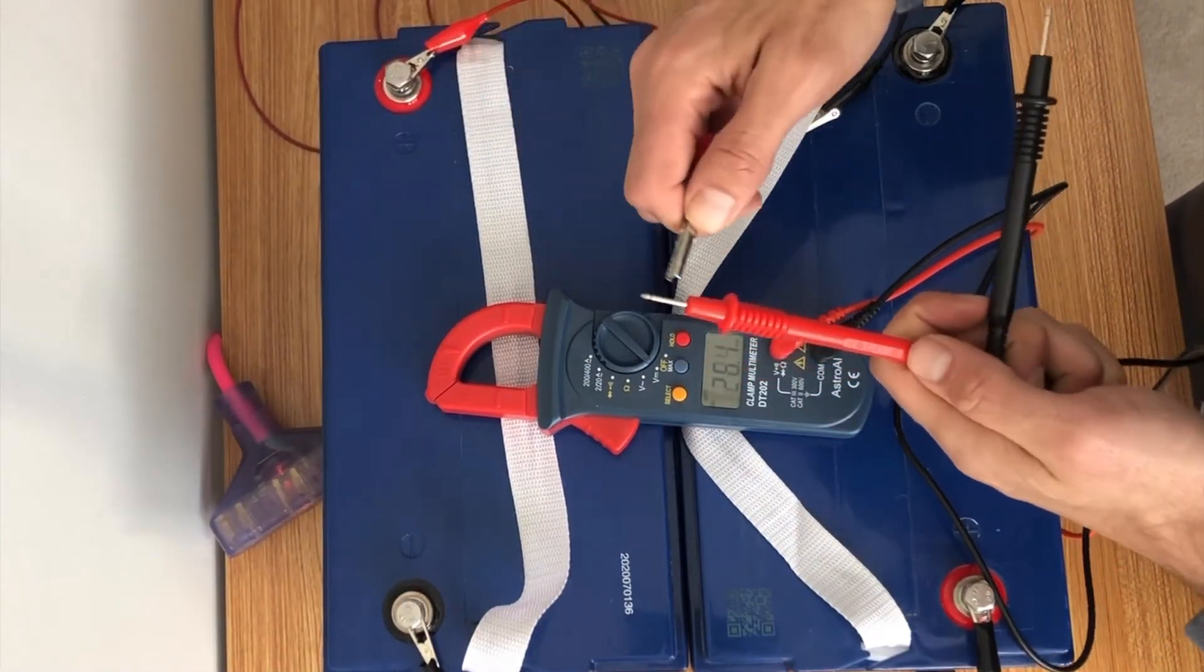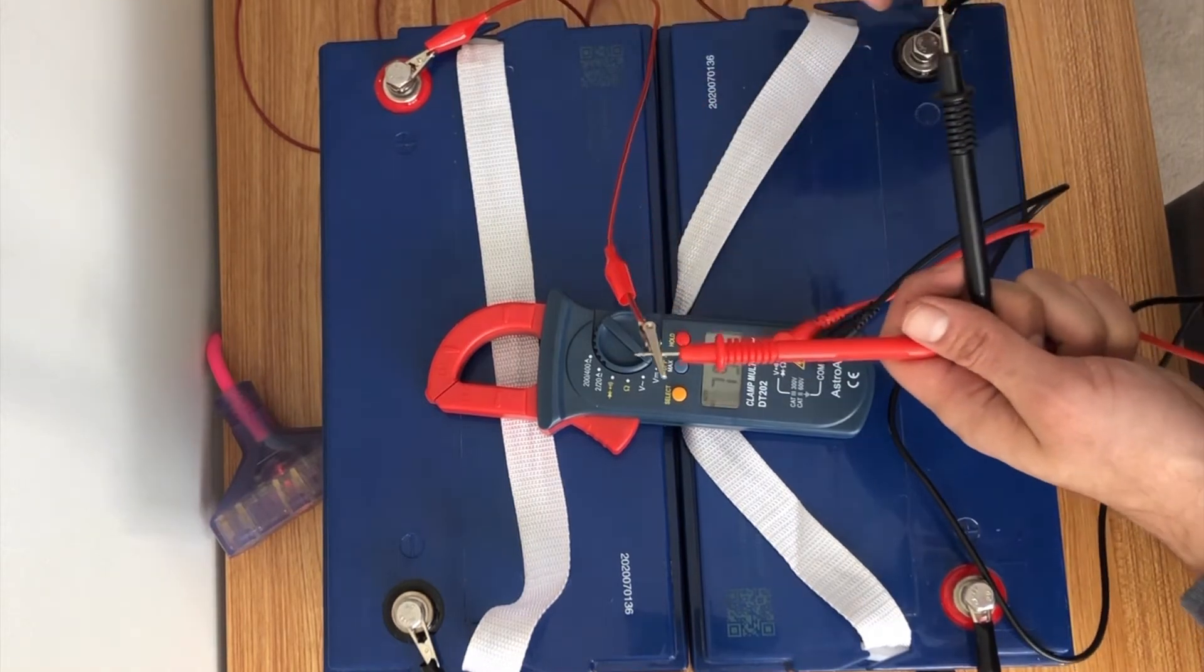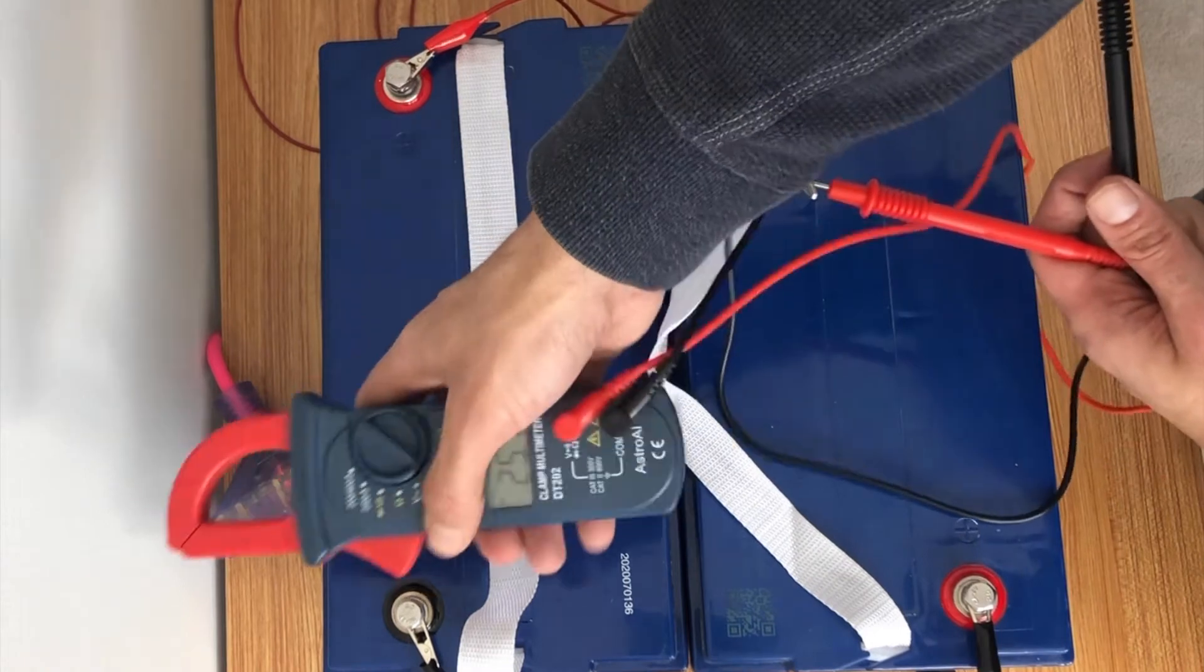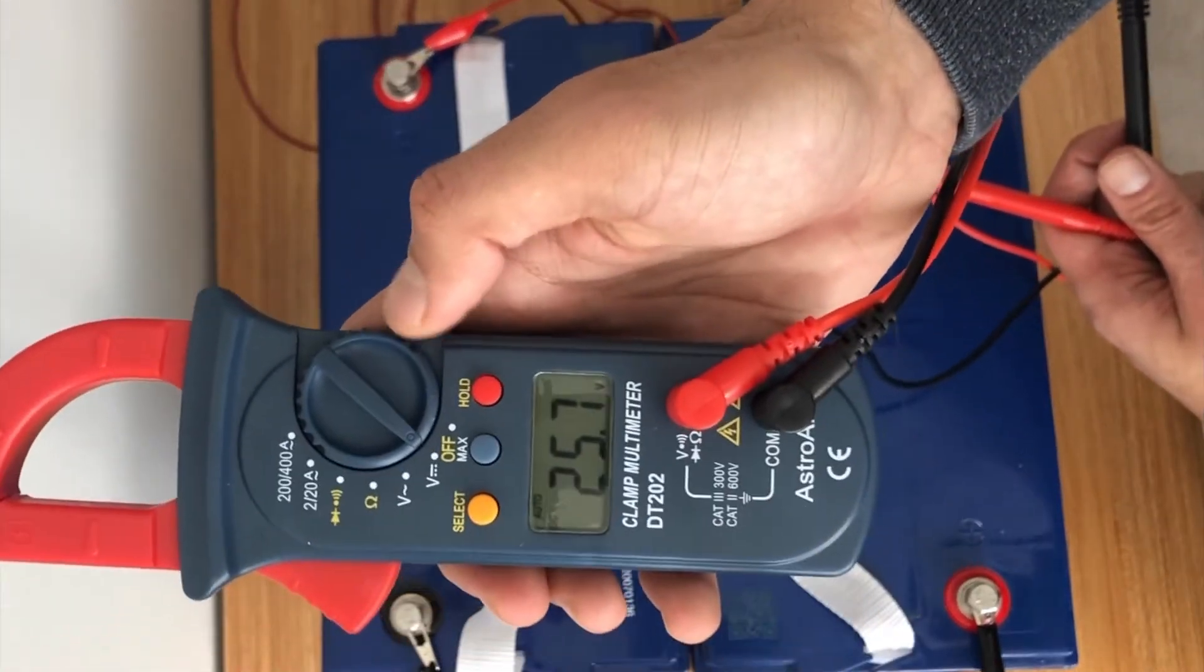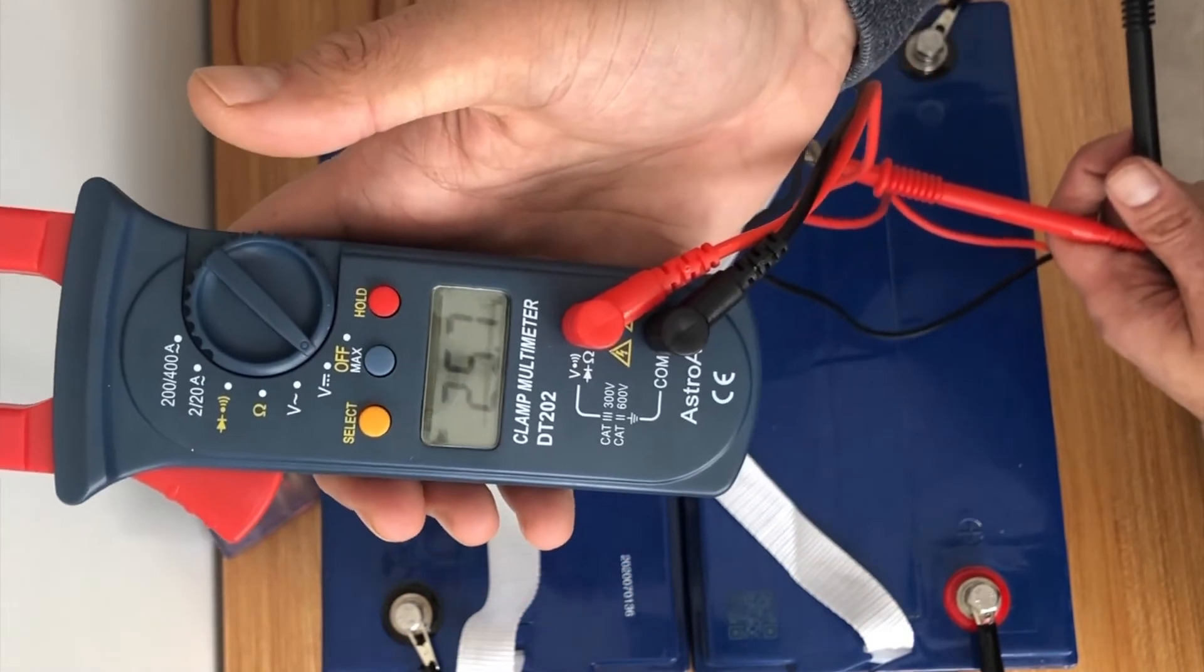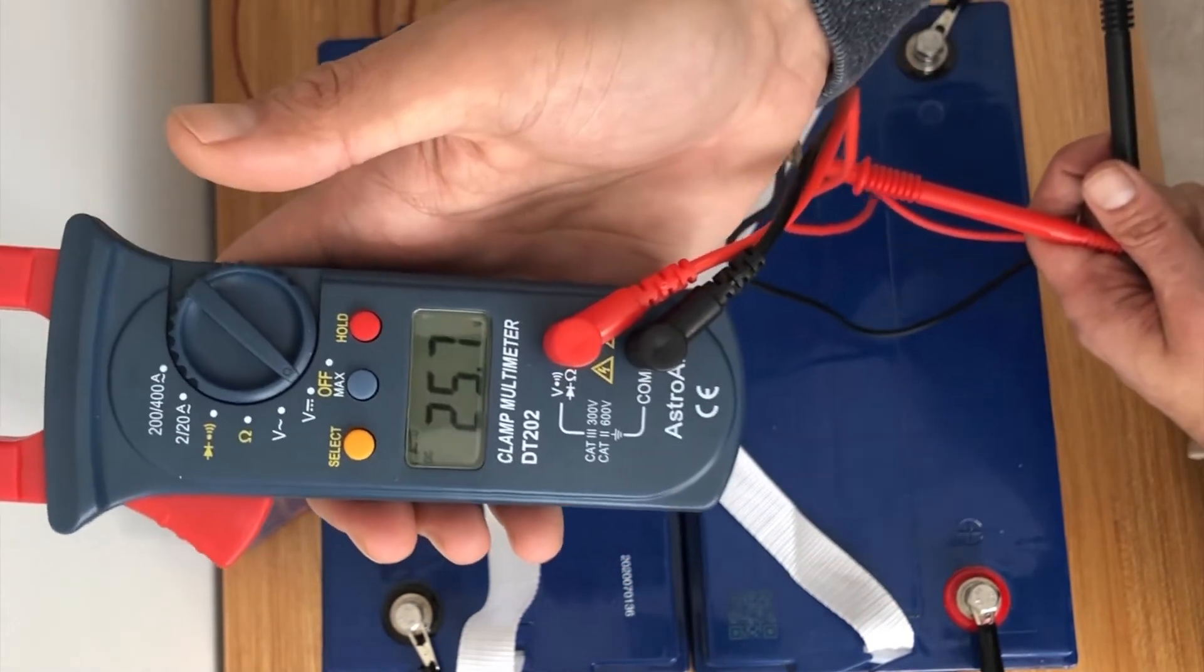So from our positive and then our negative and you can see here 25.7 volts. So we have officially increased the voltage and kept the amperage the same.